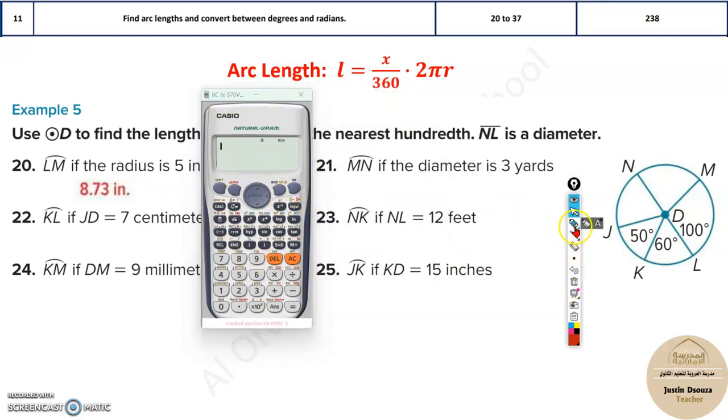Where is the arc MN? It's over here. Do we know this particular angle? No. But we know this total angle, that this is the diameter NL. Total is 180 degrees. Subtract the known angle 100, then you will get this to be 80. So the angle over here is 80, so it'll be 80 divided by 360.